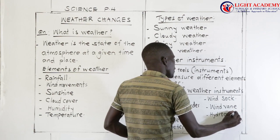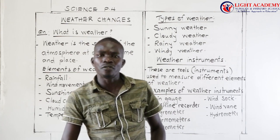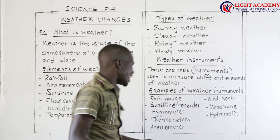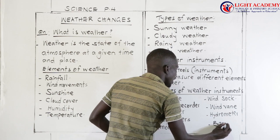The hygrometer is used for measuring the densities of liquids and water vapor. We also have the barometer at the weather station for measuring air pressure. Air pressure is also an element of weather.